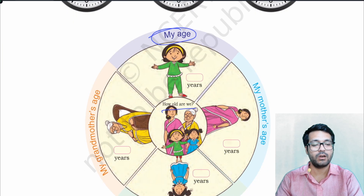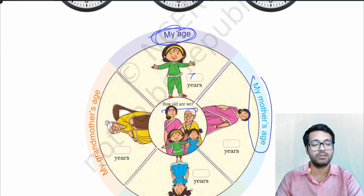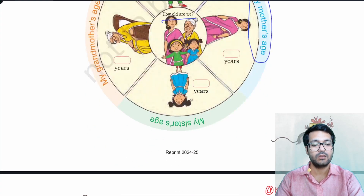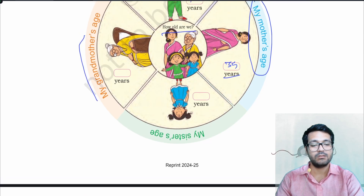How old are we? Fill in the ages. For example: my age — 7 years; my mother's age — 35 years; my grandmother's age — 60 years; my sister's age — 9 years.